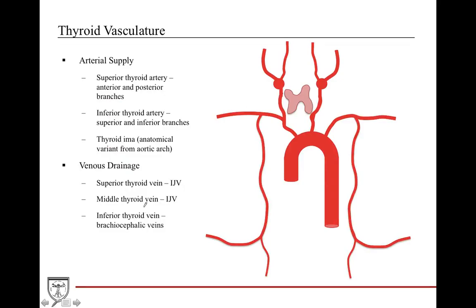The thyroid vasculature: arterial supply is provided by the superior thyroid artery via anterior and posterior branches, the inferior thyroid artery via superior and inferior branches, and also a small anatomical vessel called the thyroid ima artery that comes directly off the aortic arch. Venous drainage goes from the superior thyroid vein to the IJV, the middle thyroid vein to the IJV, and the inferior thyroid vein to the brachiocephalic.